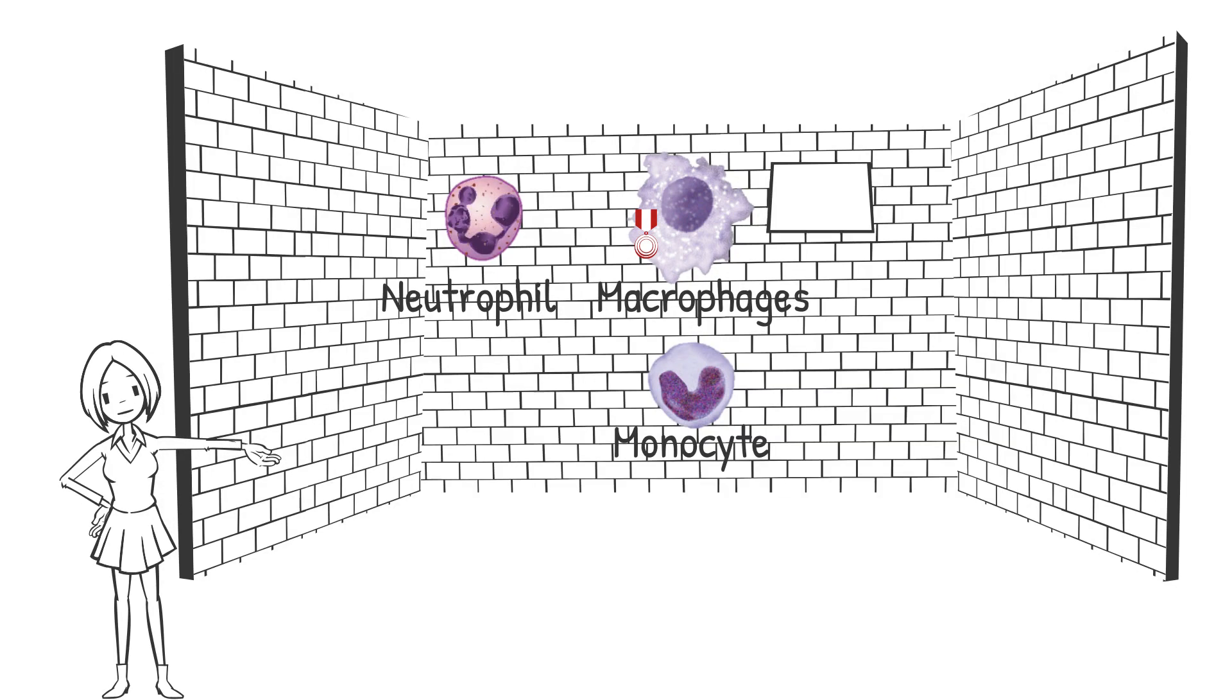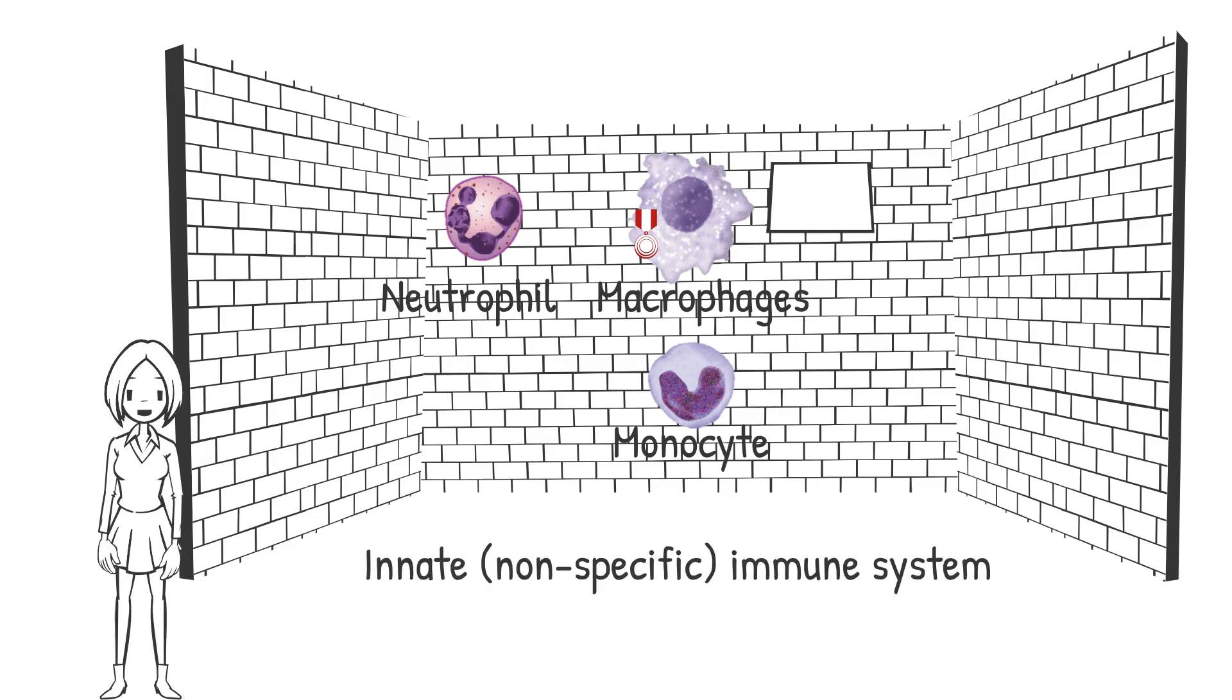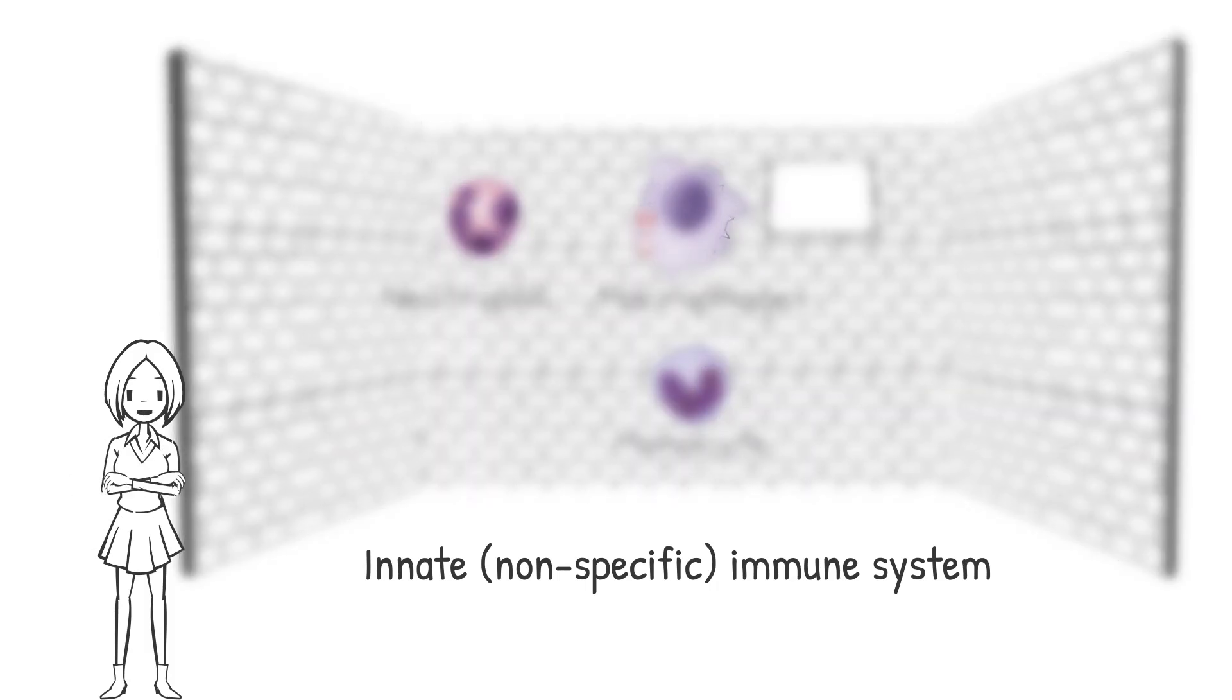The combination of physical barriers, neutrophils, and monocytes is called innate or nonspecific immune system. But what will happen if the innate immune system fails and our enemy even becomes a bigger problem?